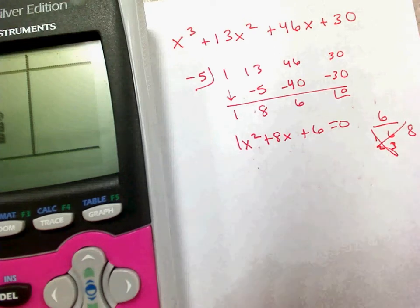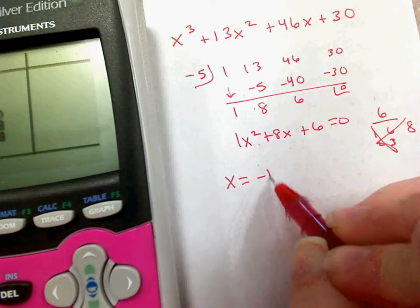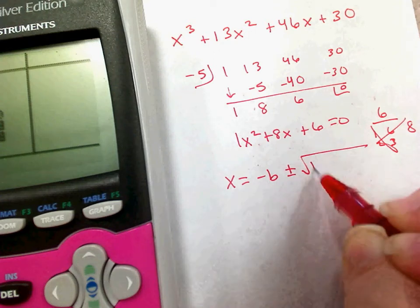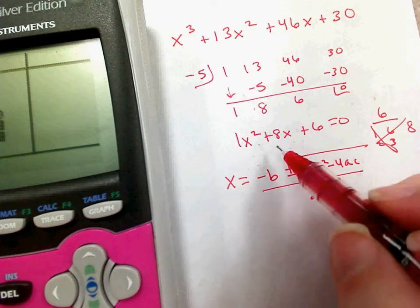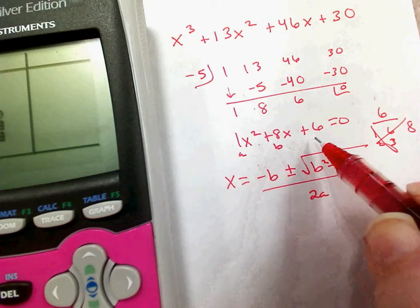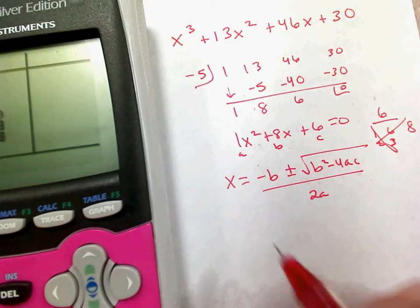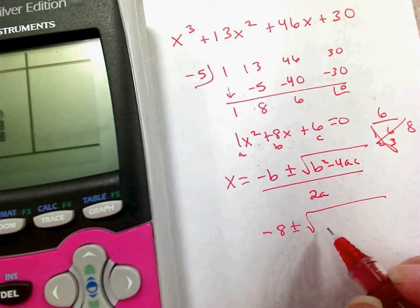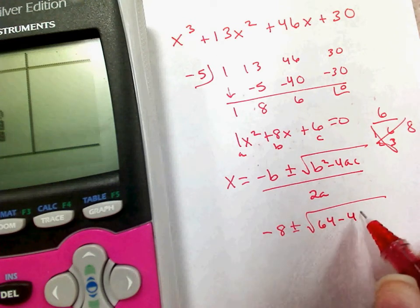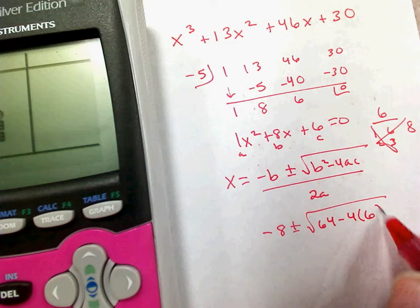Okay? So, which means I need to use quadratic formula. Now, x equals opposite b plus or minus the square root of b squared minus 4ac all over 2a. a is 1, b is 8, c is 6.